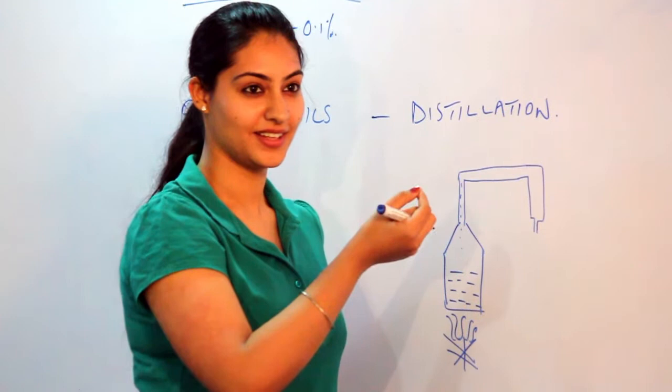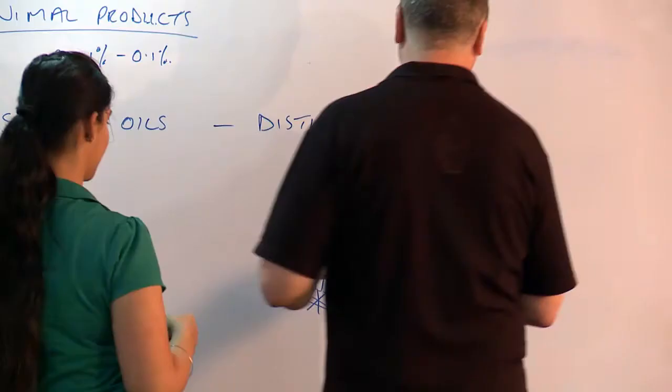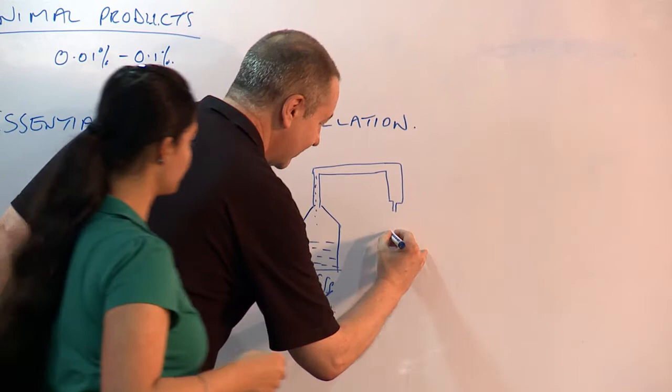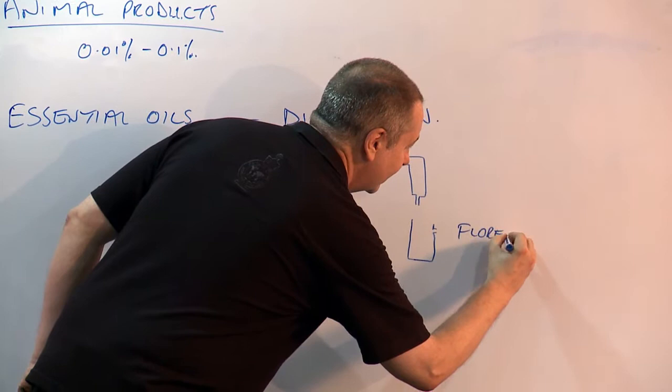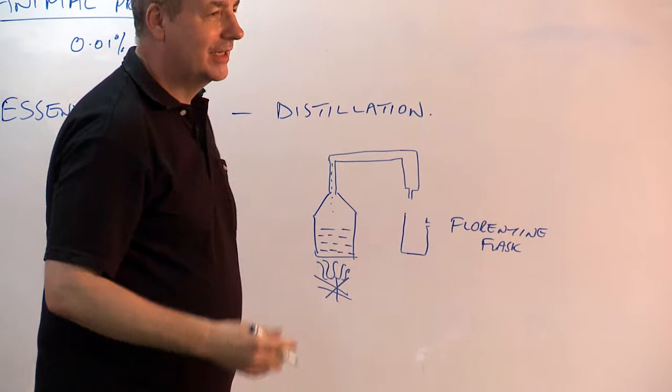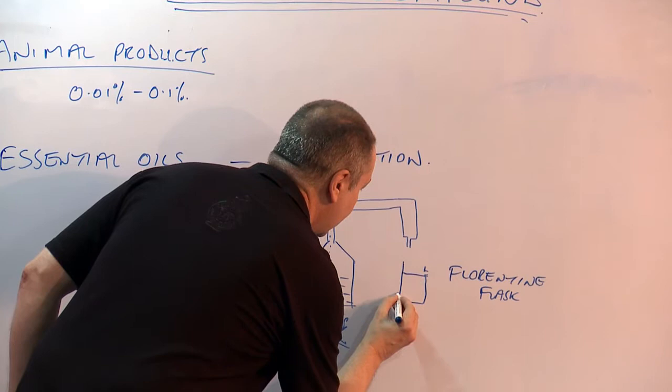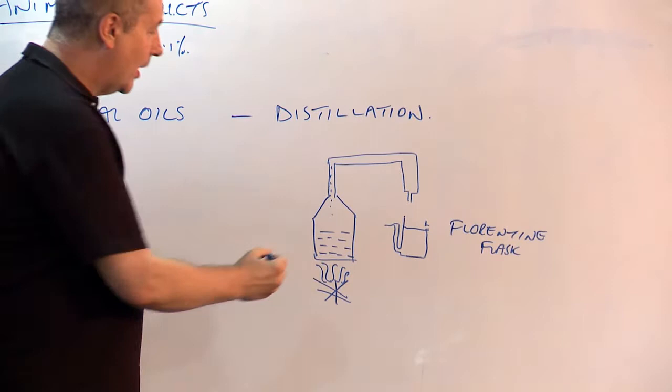Actually, yeah, it drops into a separating flask. This is called a Florentine flask. Actually, nowadays they just call it a separator.